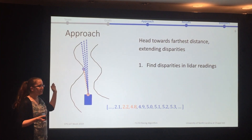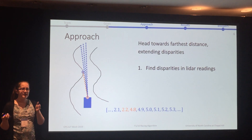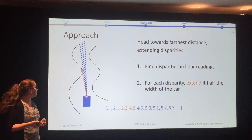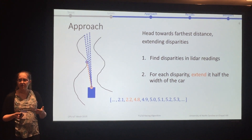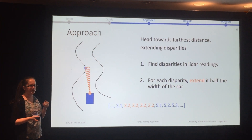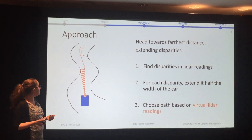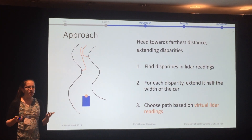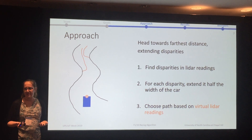What we did is we took the disparities and effectively moved them out from the wall to extend the range of the wall so that we can only pass through safe positions. This means you figure out the number of angles that correspond to the distance to the width of the car, extend a circle, and cut off those lidar readings. We're effectively working with virtual lidar readings at this point. Based on those virtual readings, we treat the resulting space as the free space to move around, so we don't have to worry about the size of the car.